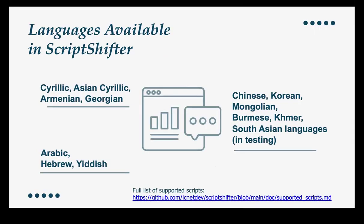There are many languages already covered. The main groups are Cyrillic, Asian Cyrillic, Armenian and Georgian. We also have Arabic, Hebrew and Yiddish. And there are many Asian languages, such as Chinese, Korean, Mongolian, Burmese, Khmer and South Asian languages. Some of them are still in testing, but many are mature for use. At the bottom of the slide, if you get the source of this presentation, you can see the link to the complete list, which also indicates what is in beta, what is mature, and what is in development.